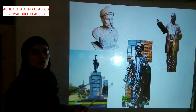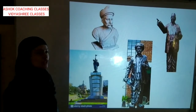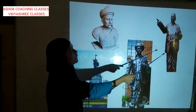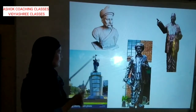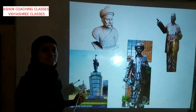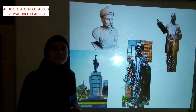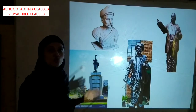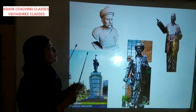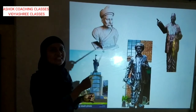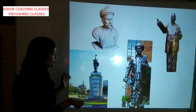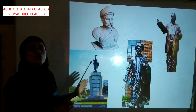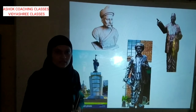Abhi aap screen mein agar aap dekho toh aapko kuch statues dikh rahe hain — Lokmanya Tilak, Mahatma Jyotirao Phule, Dr. Baba Sahib Ambedkar — aur yeh jo aapko dikh raha hai Hutatma Smarak. Hutatma ka matlab martyrs — jo shaheed hue hain unka smarak. Toh sirf individual personalities ka nahi, balki yeh jo smarak hai, yeh jo memorial hai, yeh ek particular event ko dedicate karte hue hain.